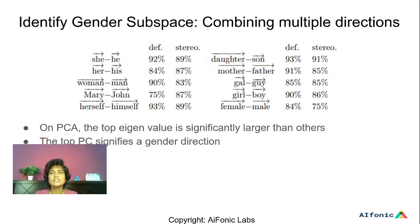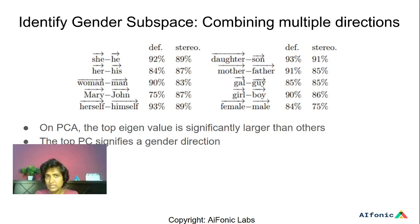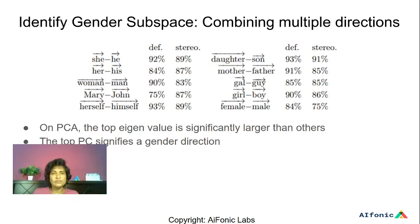The first step is to identify a gender subspace. To do this, they find a set of gender-specific pairs — for instance, she/he, her/his, woman/man — and take the differences: she minus he, daughter minus son, and so on. They take all these vectors and perform PCA, finding that the top few eigenvectors constitute the gender subspace. In the case of gender bias specifically, the top eigenvalue is significantly higher than the others, so it can be thought of as a single gender direction rather than a subspace. In the more general case for other biases like racial or age bias, it remains a subspace.